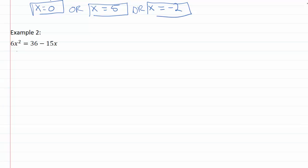So in example two I've got again some stuff on each side of the equation. My x² is over on this side and it's positive. So I want to keep it positive I'll move everything else over to the same side. Keep it positive. Minus 36 plus 15x. Okay so 6x² + 15x - 36 = 0.